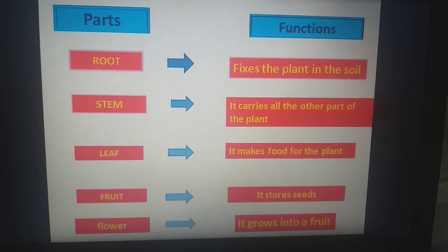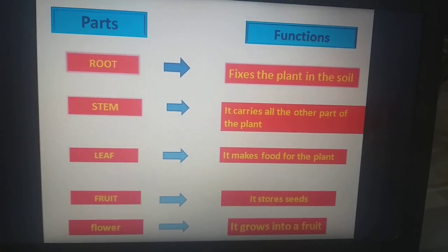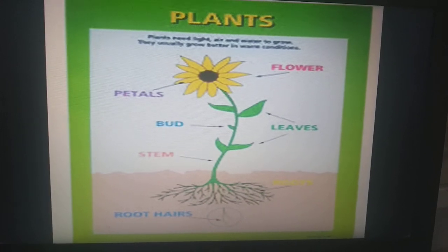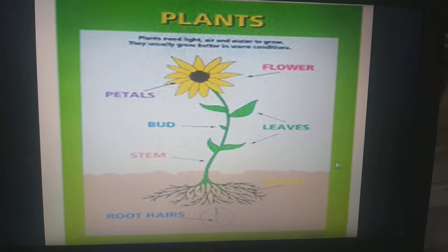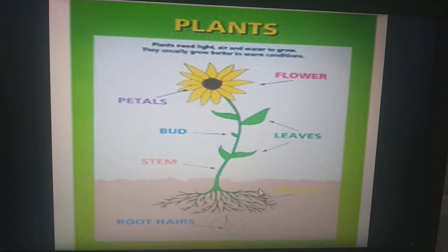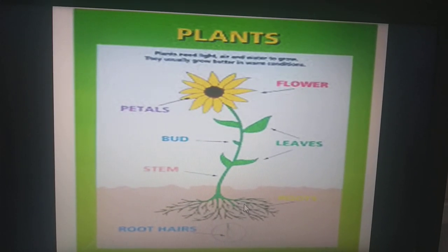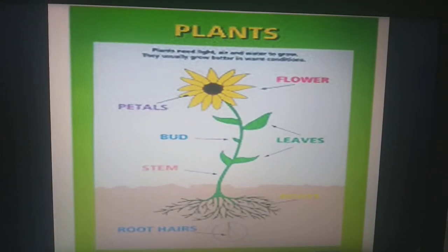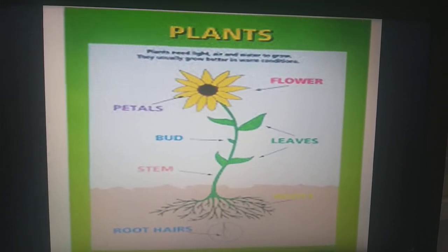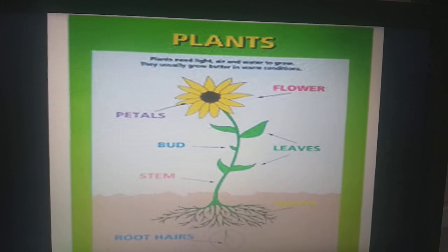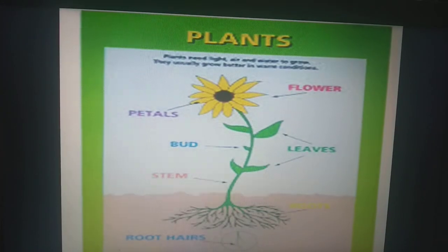Look, what is the function of root? Root fixes the plant in the soil. Look at this picture. Root is the part which fixes the plant in the soil and it has also a very important function that is it absorbs water from the soil. As you know students, plants are living beings and they also need water and food for their survival. Then who gave plant food and water? Yes, the root absorbs water.